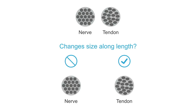By being active with your probe and not being afraid to move around — especially at the beginning of your learning — you will start to see tissue differently, and by doing so, you will become very comfortable distinguishing nerves from their surrounding structures.